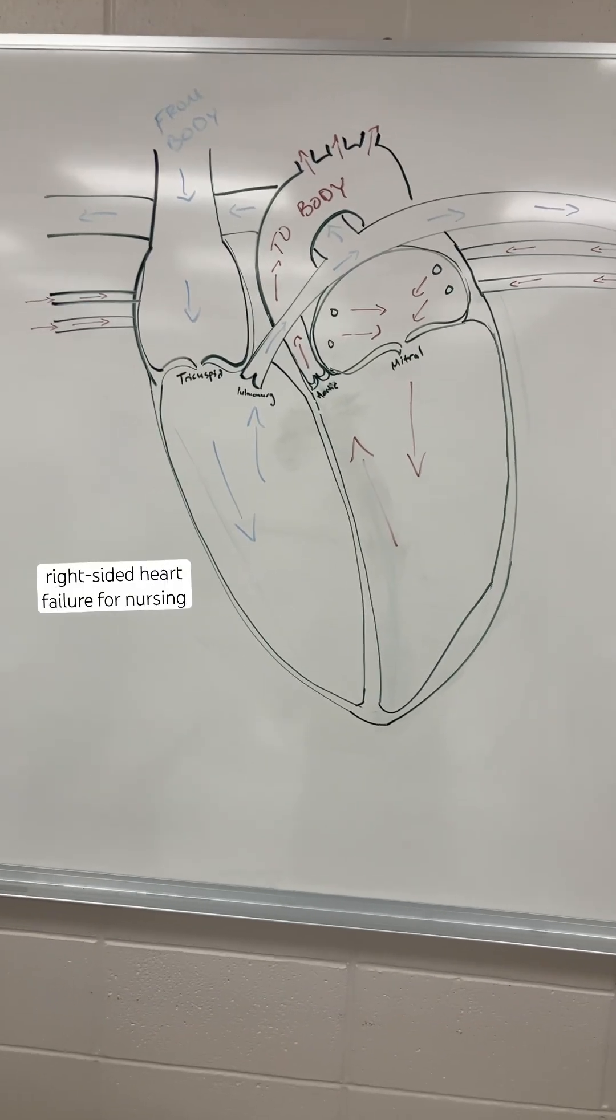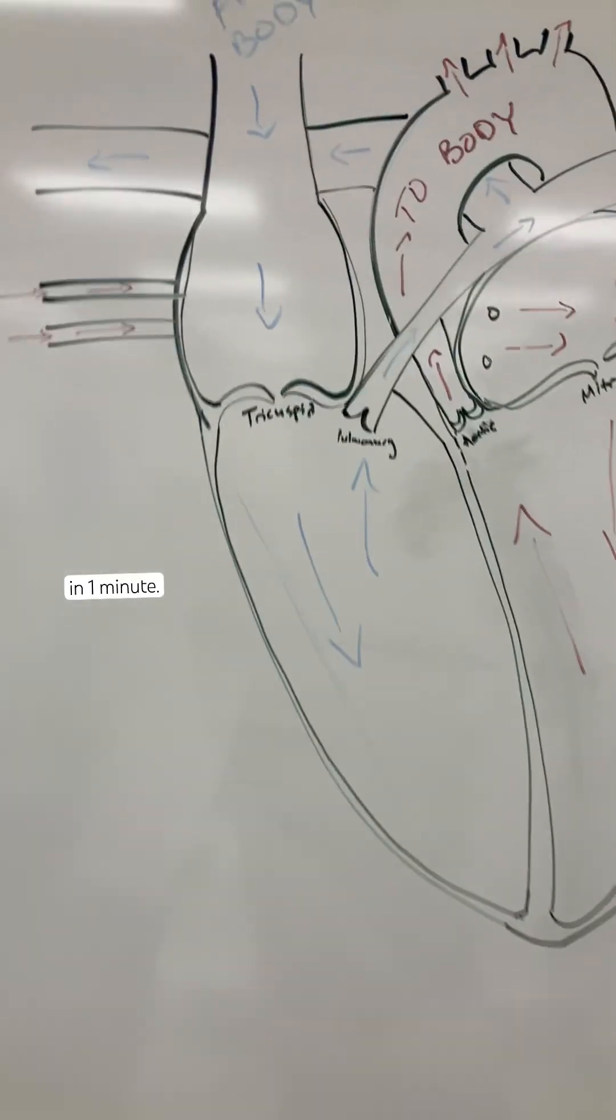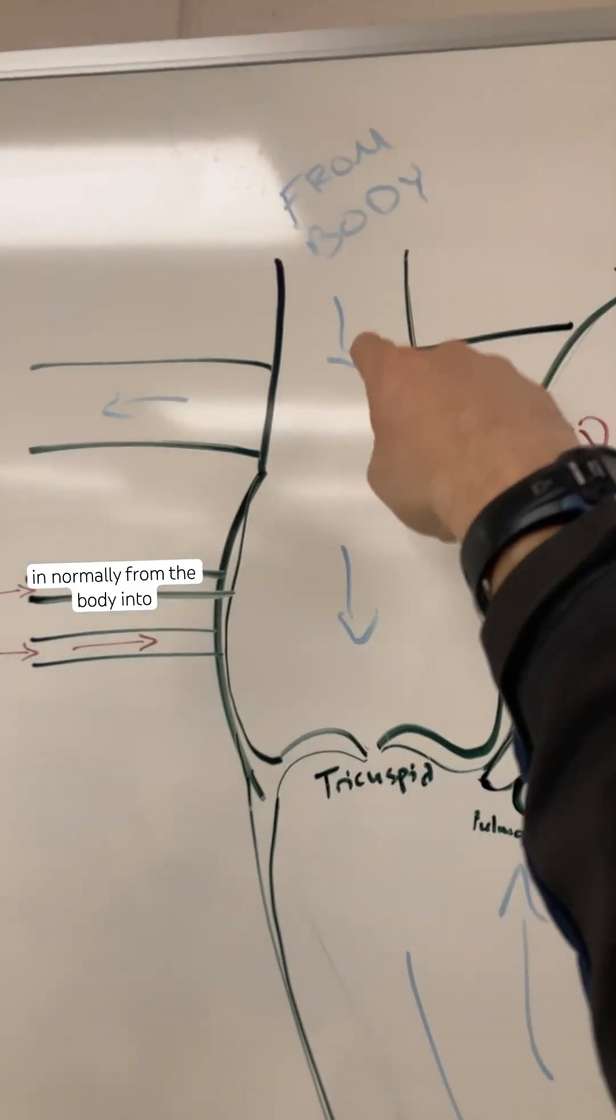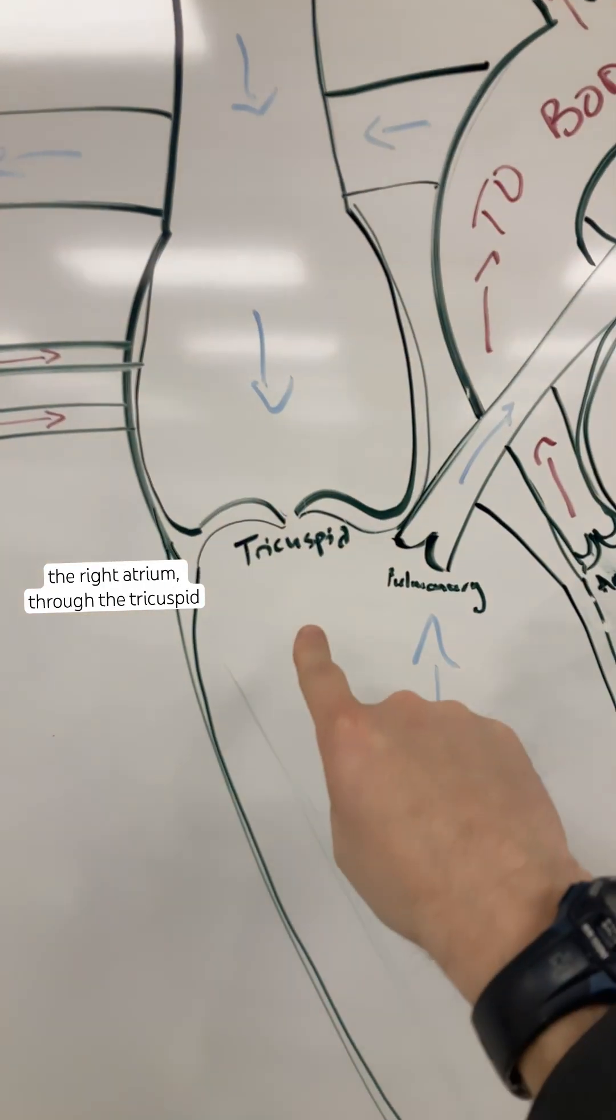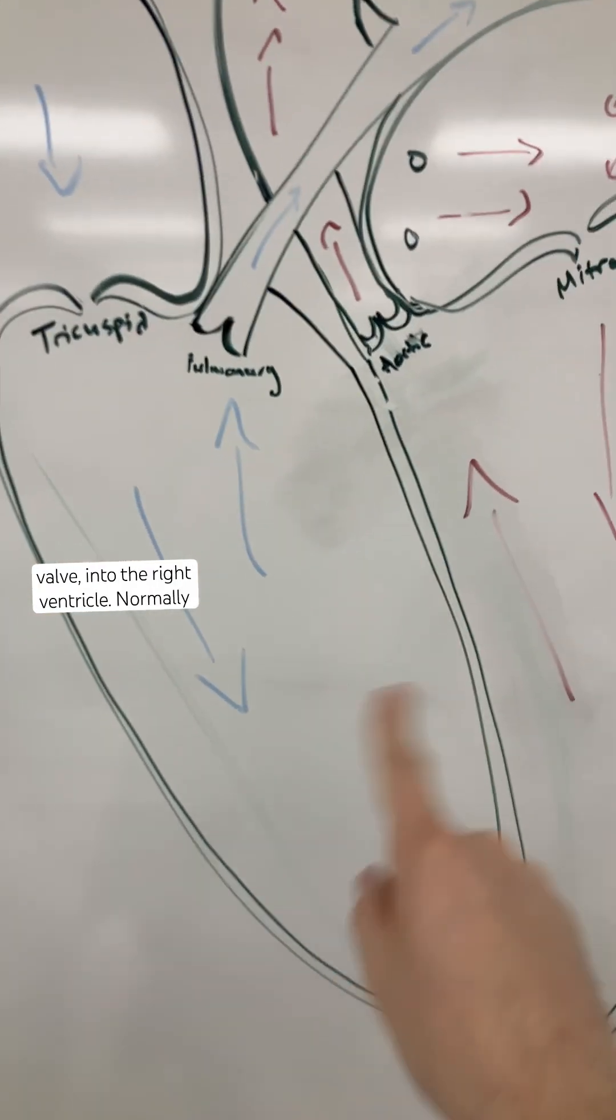All right, this is left and right sided heart failure for nursing in one minute. So blood comes in normally from the body into the right atrium through the tricuspid valve into the right ventricle.